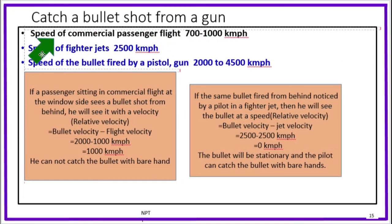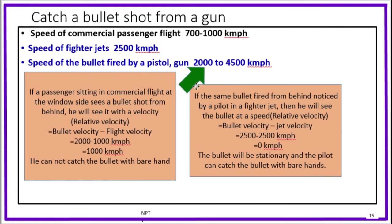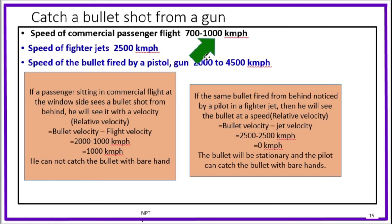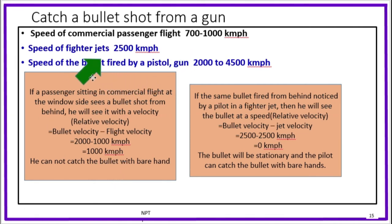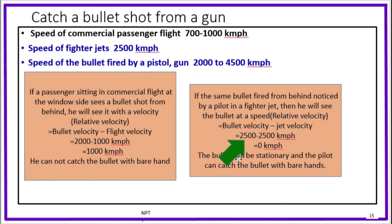To catch a bullet shot from a gun: the speed of a commercial passenger flight is 1000 km per hour, a fighter jet is 2500 km per hour, and a bullet is 2000 km per hour. If the bullet and fighter jet are both at 1000 km per hour, this makes it easy for the pilot to catch.